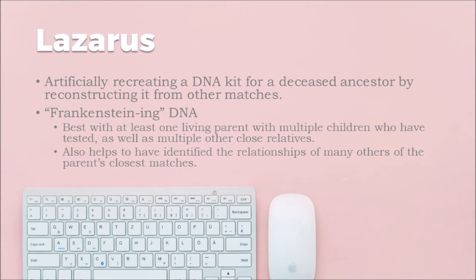The best way I can imagine this working — though I couldn't figure out exactly how to make it run, as I didn't see a place to input the root kit number, only a place for a spouse's kit — is: after you've had one of your parents tested, you may want to attempt to recreate a DNA kit for a deceased parent. My mom is tested, my father is deceased, and this is a tool I could potentially use to recreate his DNA kit for analysis.